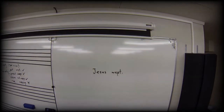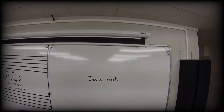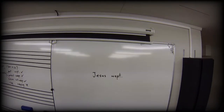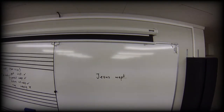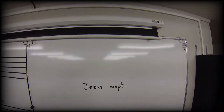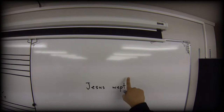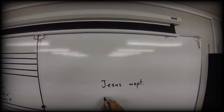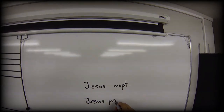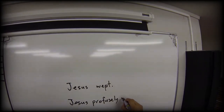Let's pimp this sentence. 'Jesus wept' is a little bit short for my liking, a little bit colourless. So what could we do? Well, we could add to the verb an adverb, which is just going to modify or colour that verb a bit. We could say 'Jesus profusely wept.'